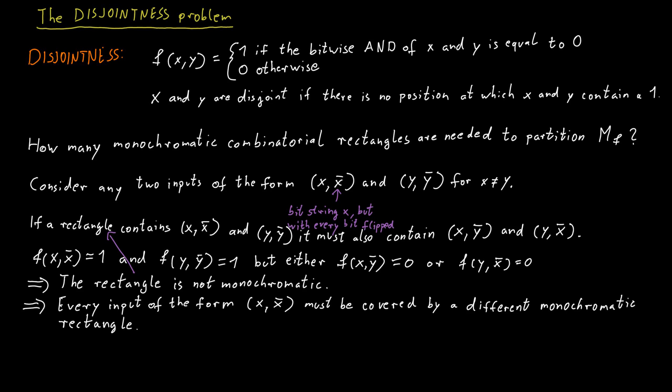How many such inputs do we have? That's just counting how many bit strings of length N there are — those are the possible values for x. We have N bits, and there are 2^N many bit strings of length N. Therefore, we have at least 2^N many monochromatic combinatorial rectangles. In fact, we know we have even more, because so far we've only accounted for monochromatic rectangles where all entries are one. But some values in the matrix are zero, so there must be additional monochromatic rectangles capturing those zeros. So in total, we must have at least 2^N + 1 monochromatic combinatorial rectangles that partition our matrix.